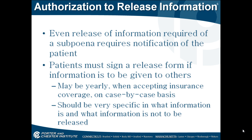Authorization to release information. Even release of information required by a subpoena requires notification of the patient. The patient must sign a release form if information is to be given to others. It may be yearly when accepting insurance coverage, or on a case-by-case basis. It should be very specific in what information is and what information is not to be released. Yearly, you'll have them sign to update their insurance so that you can release information to the insurance company, and you also want to make sure that you update who you can release information to.